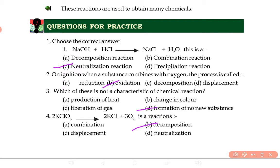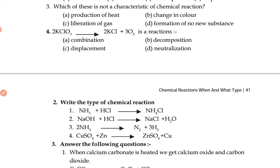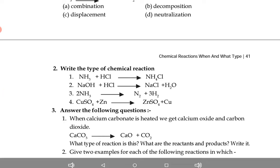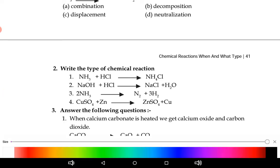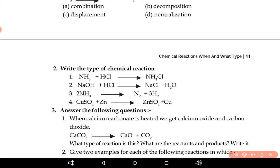You write the answers in your copy. Now next is write the type of chemical reaction. This reaction is combination reaction. NaOH plus HCl, this is neutralization reaction.